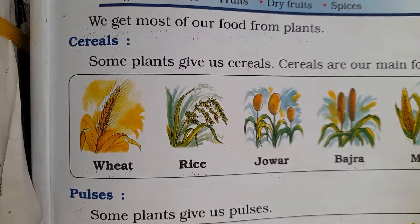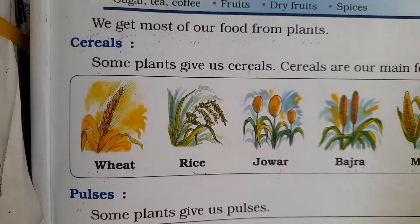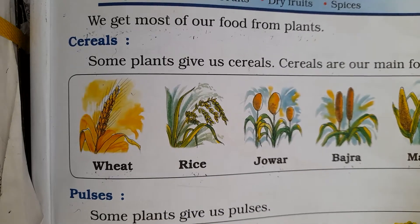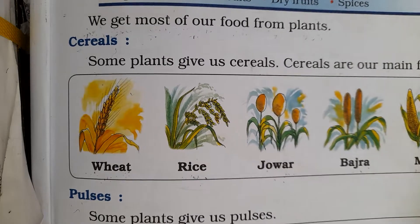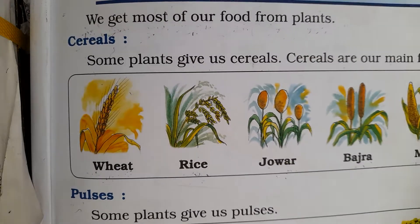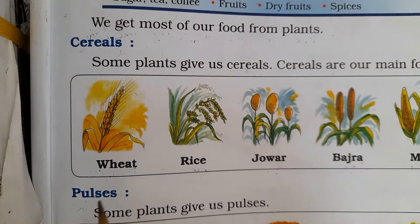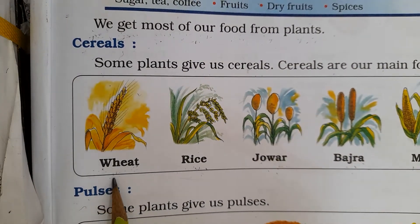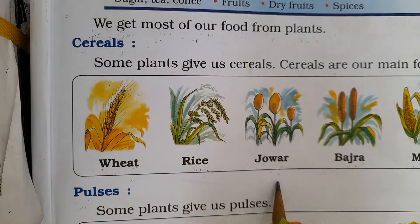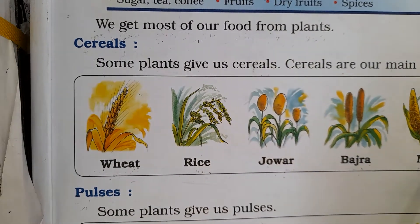I am going to explain in short notes. Cereals — which ones are there? You have to remember: wheat, rice, juar, bajra, and maize.